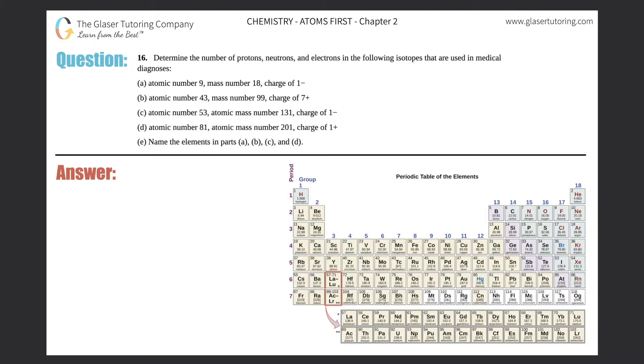Number 16. Determine the number of protons, neutrons, and electrons in the following isotopes that are used in medical diagnosis. So I see that we have A through E, so I'm just going to write A, B, C, D, and then I'll put E down here. Alright, so we should be familiar as to how to find protons, neutrons, and electrons. If not, go back to starting in this chapter with question number 11.